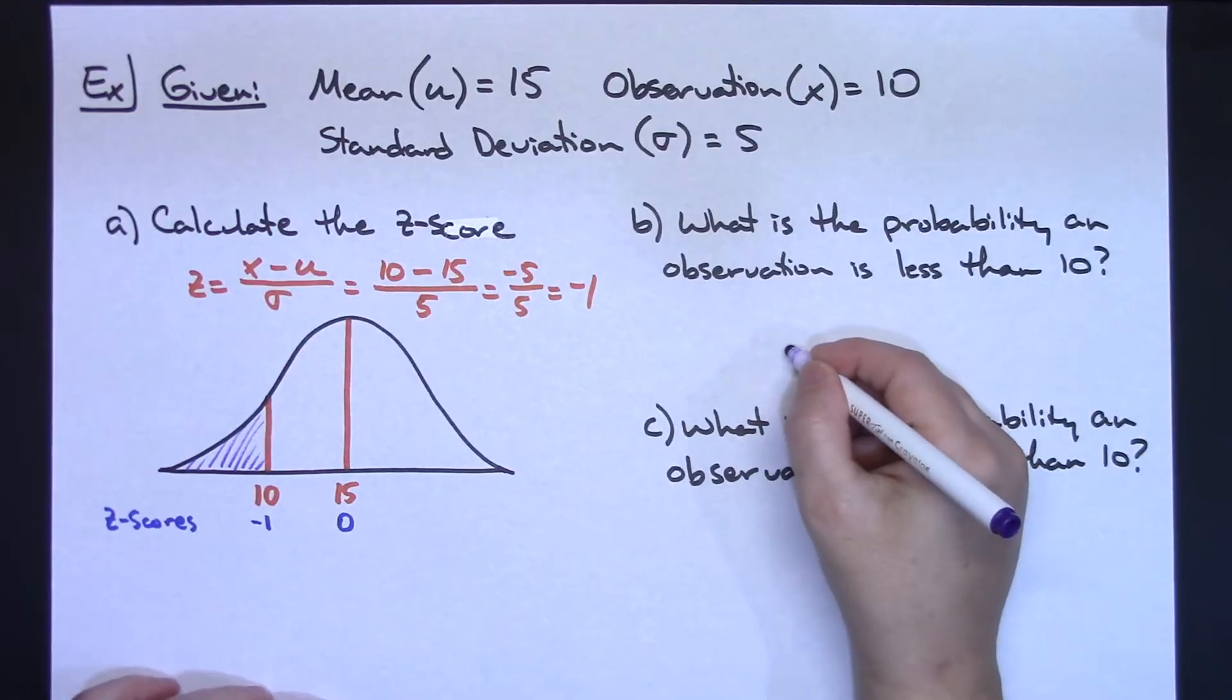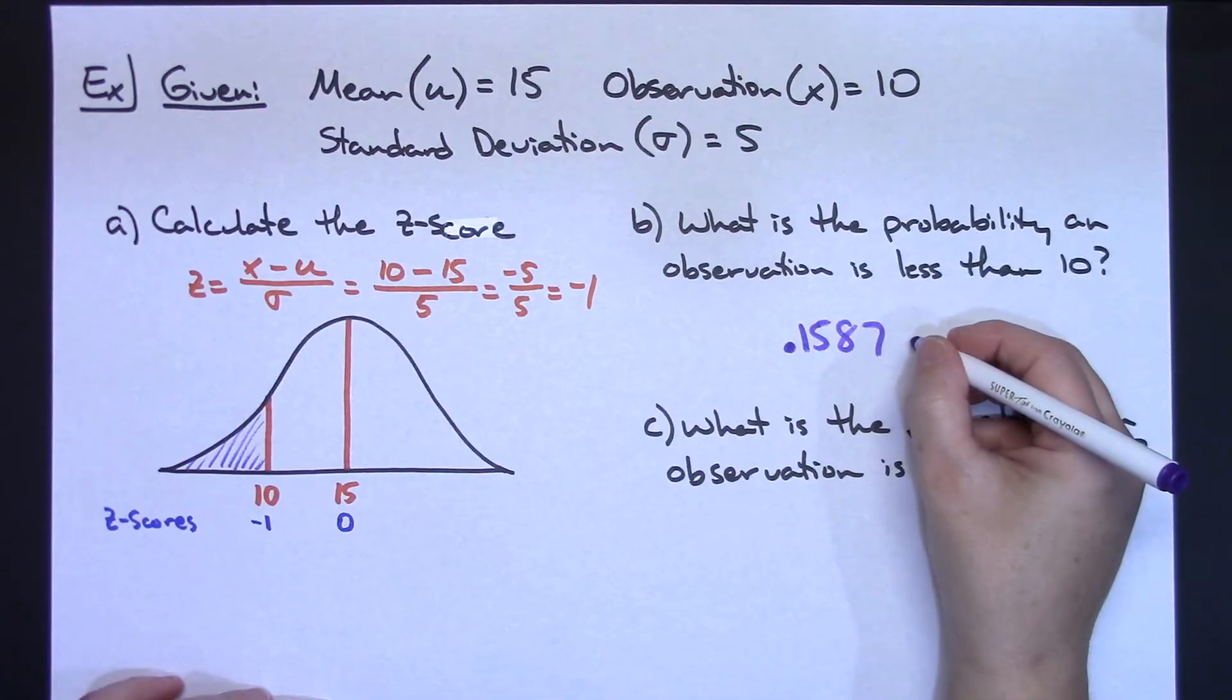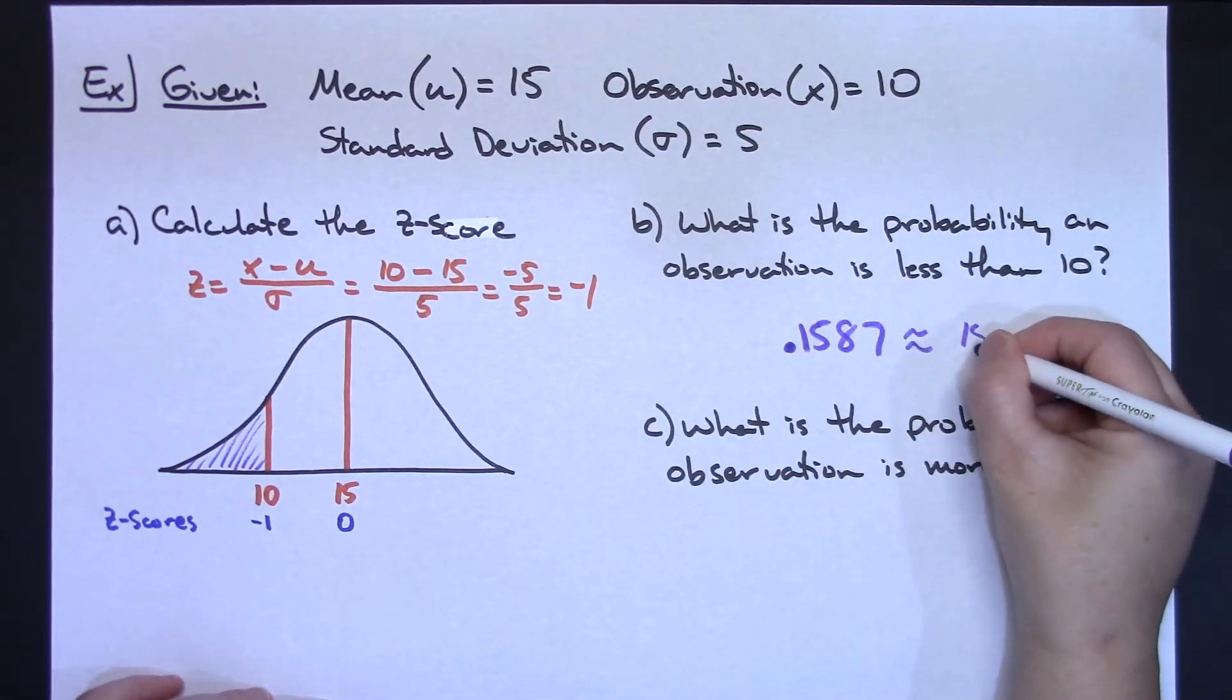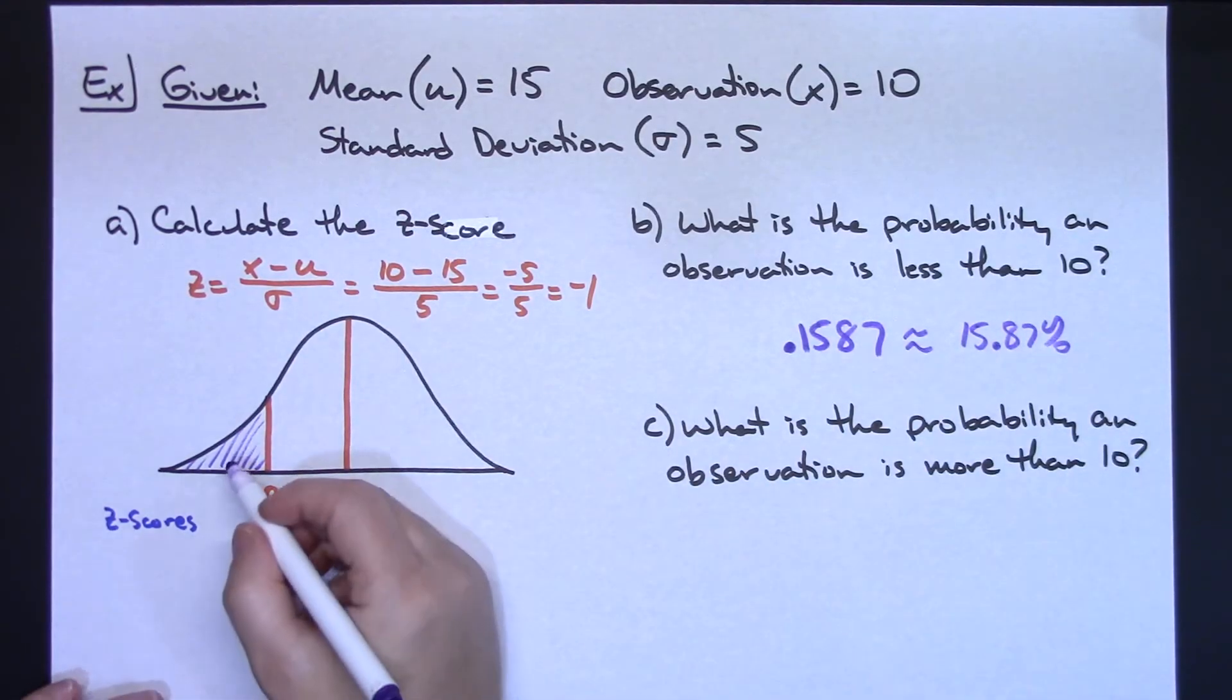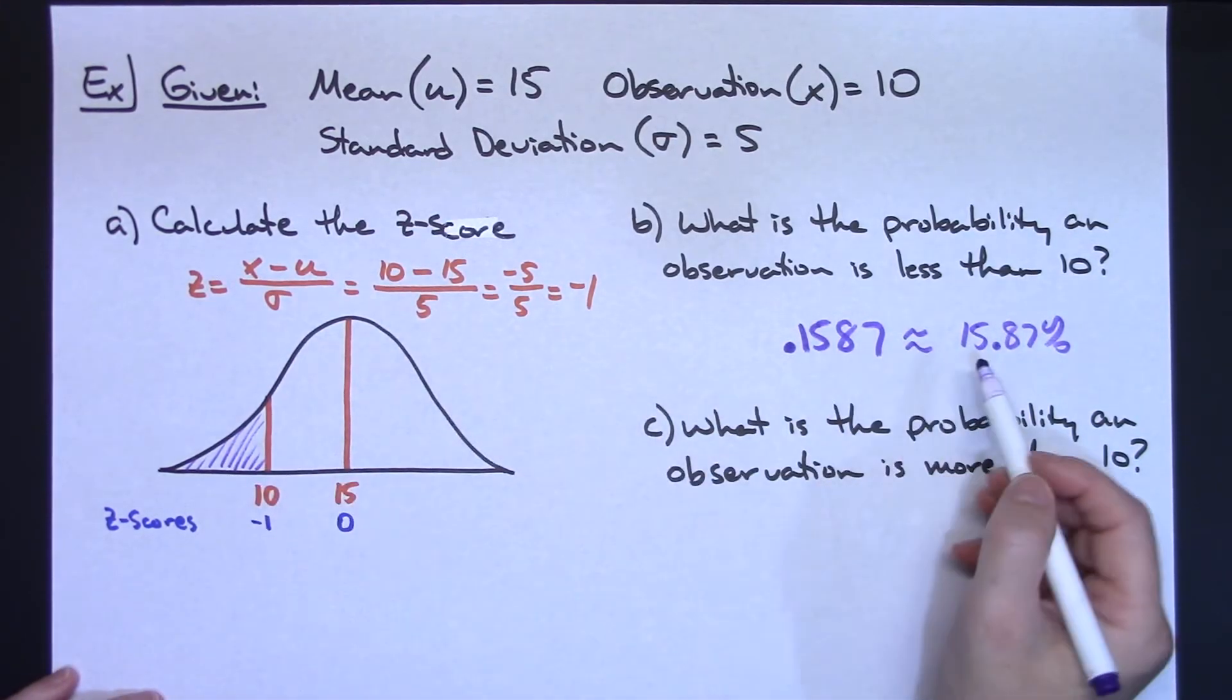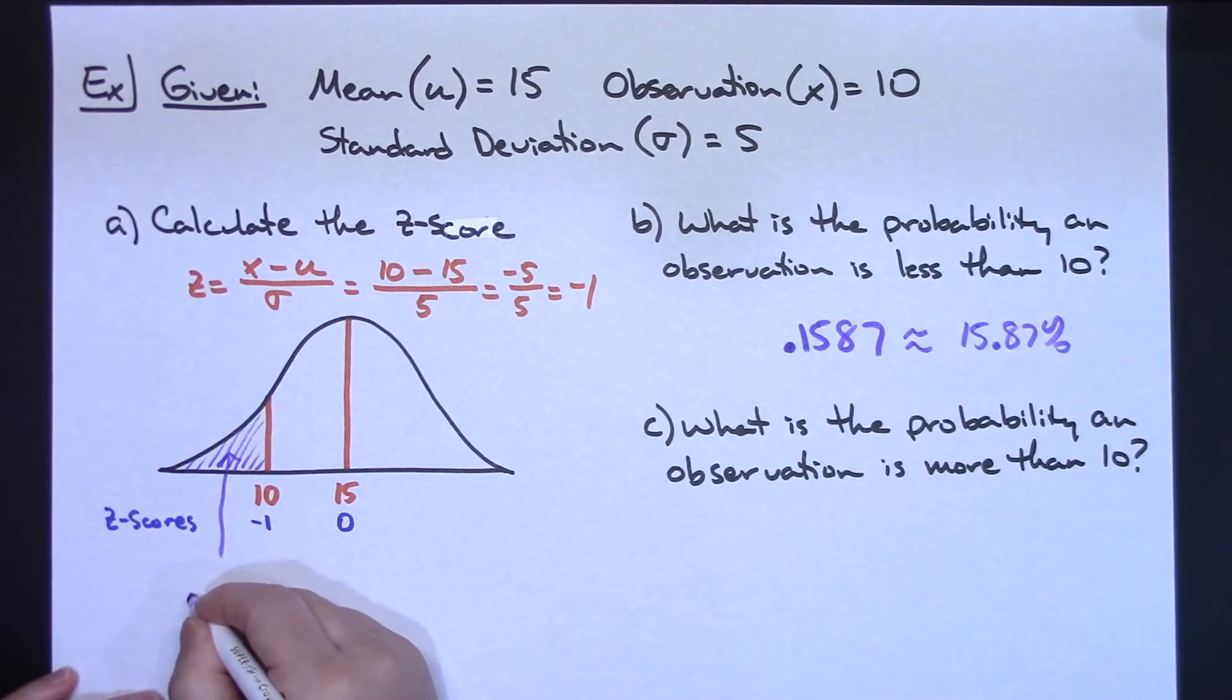So I said 0.1587. If you wanted to turn that into a probability written as a percent, it would be about 15.87%. So what's the probability? 15.87% that the probability an observation is going to be less than 10. So 0.1587.